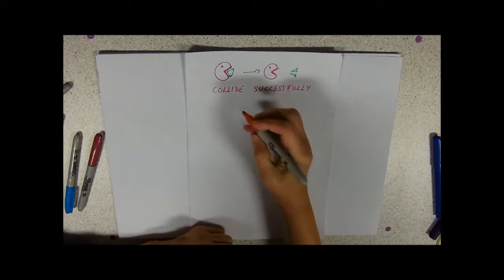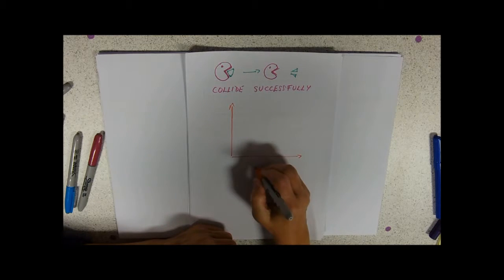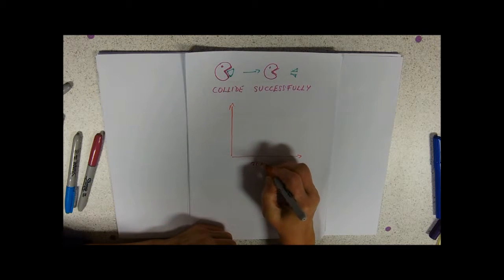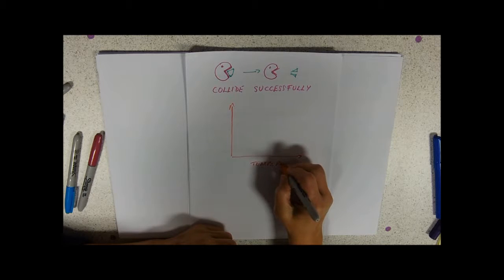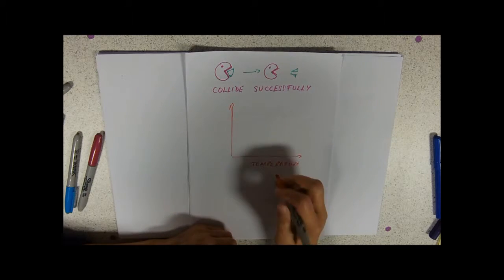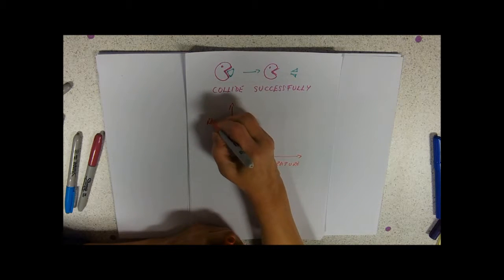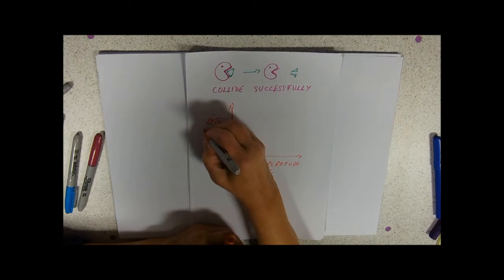Things that can affect how that happens: I suppose the easiest one, the one that everybody always starts with, is temperature—remembering that we don't actually abbreviate that to temp, which is a temporary person in an office—and we're going to do a rate of reaction.